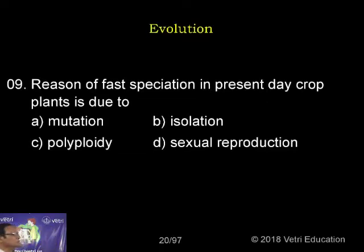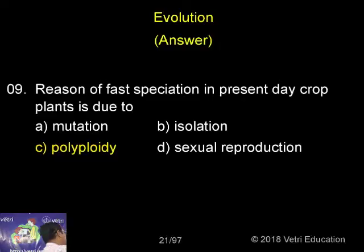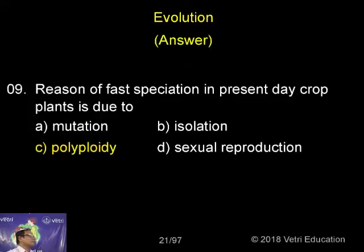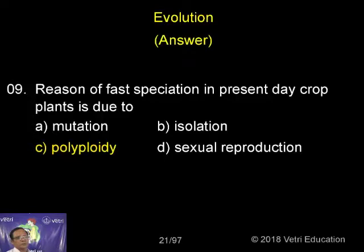The reason for fast speciation in present-day crop plants is due to mutation, isolation, polyploidy, and sex cell reproduction. In the case of plants, we get different types of varieties because of an increase in number of chromosomes. Variation from the normal diploid number of chromosomes is called polyploidy — more than two sets of chromosomes.